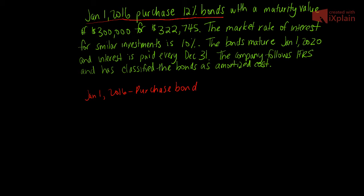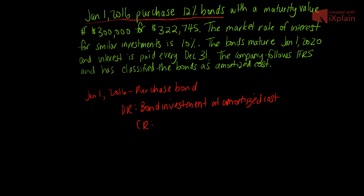Our first journal entry is straightforward. We need to debit an investment to put it on our balance sheet as an asset and credit cash for whatever we paid. When we record an amortized cost investment, we use the account label 'Bond Investment at Amortized Cost,' because only bonds can be classified at amortized cost under IFRS 9. The credit is cash.